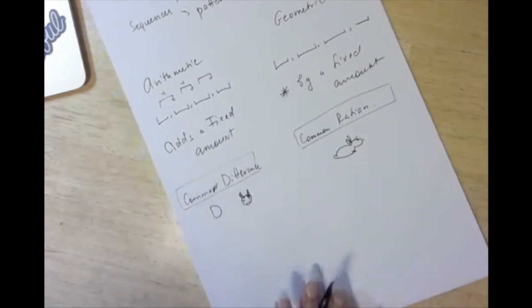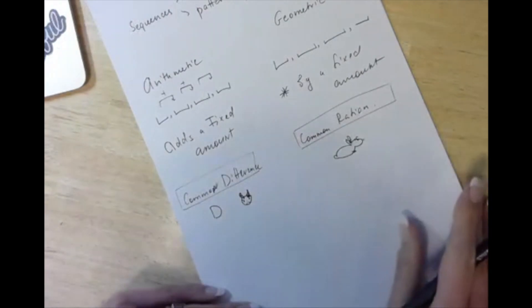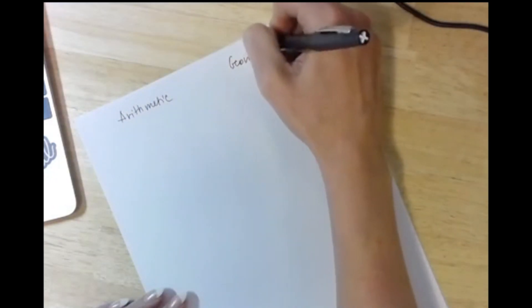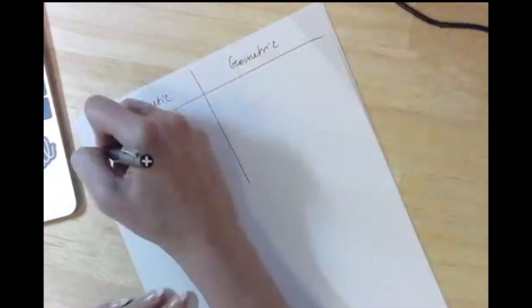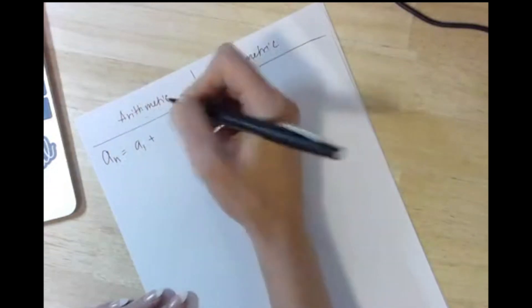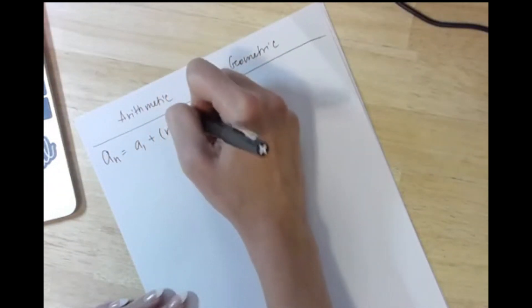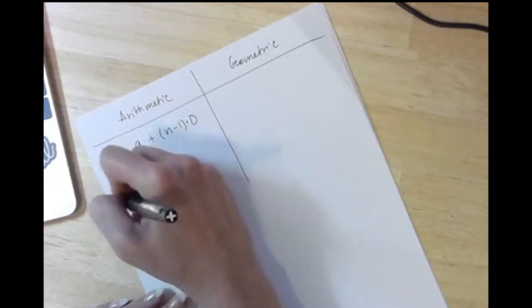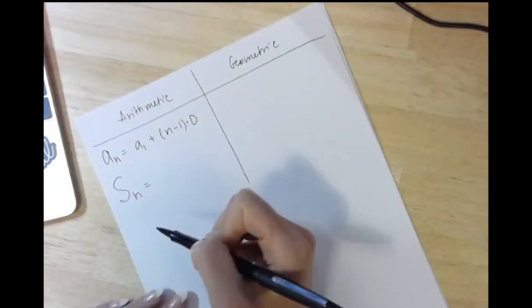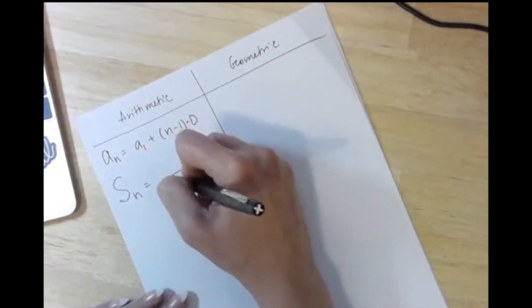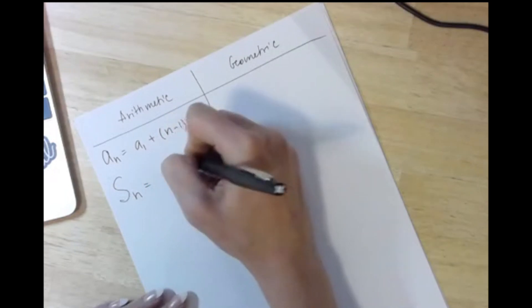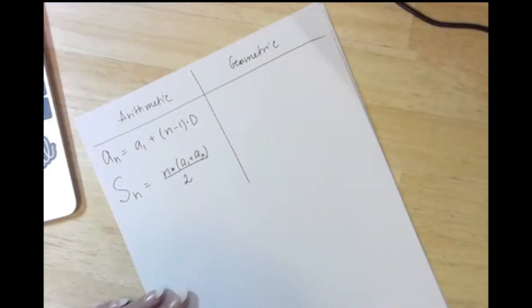There are two formulas for arithmetic sequences and two for geometric sequences. For arithmetic, the nth term formula is: a_n = a_1 + (n − 1) × d, where d is the distance. The arithmetic sum formula is: S_n = n(a_1 + a_n) / 2.